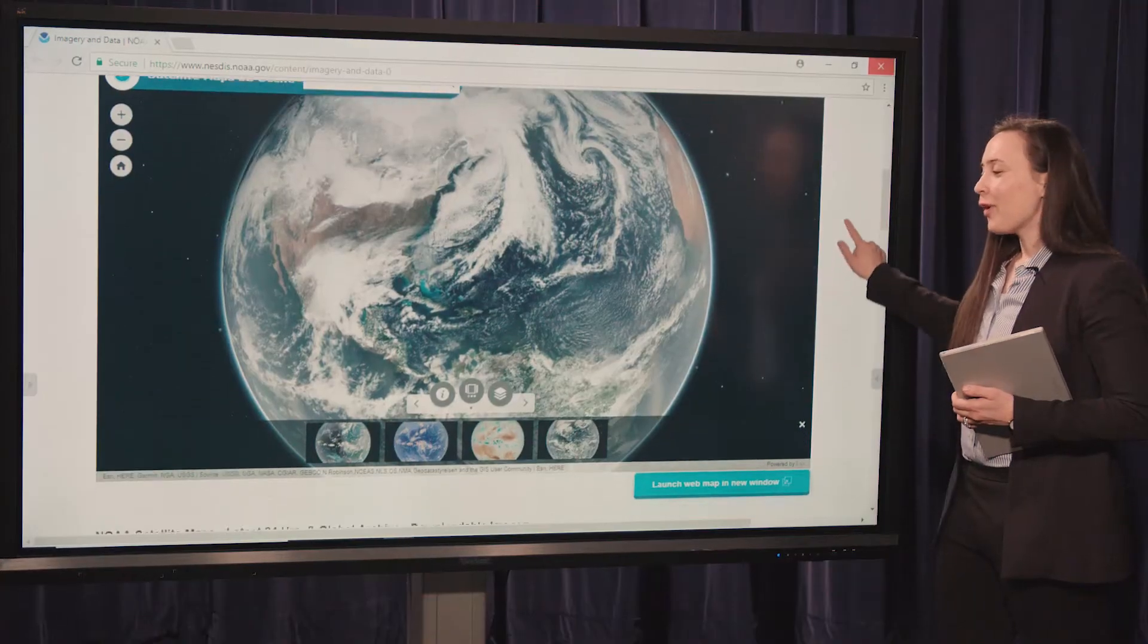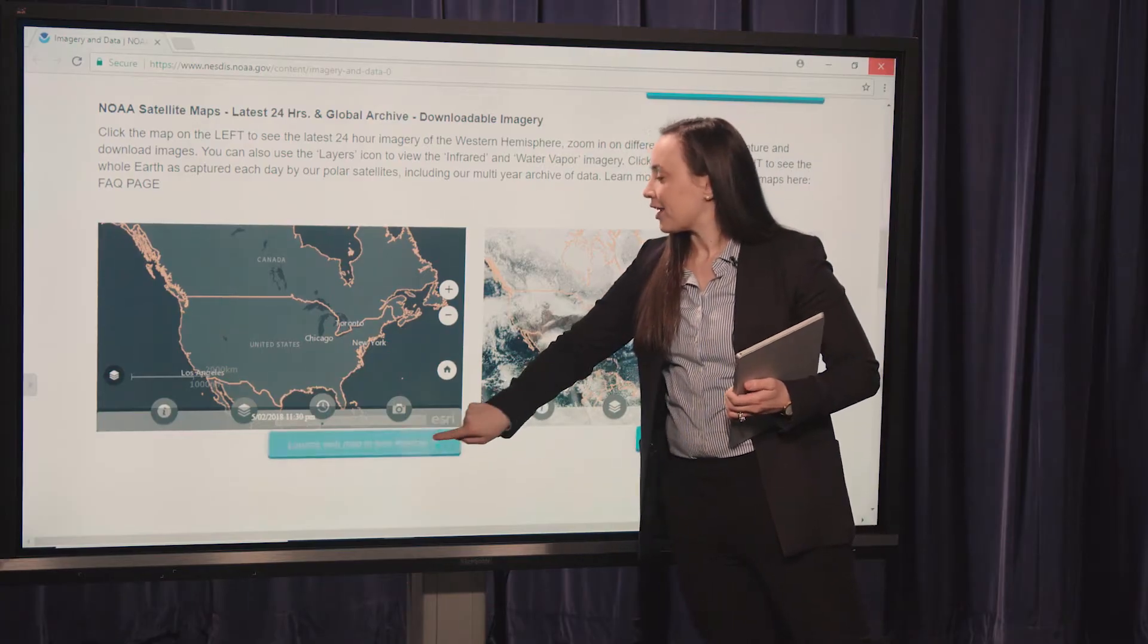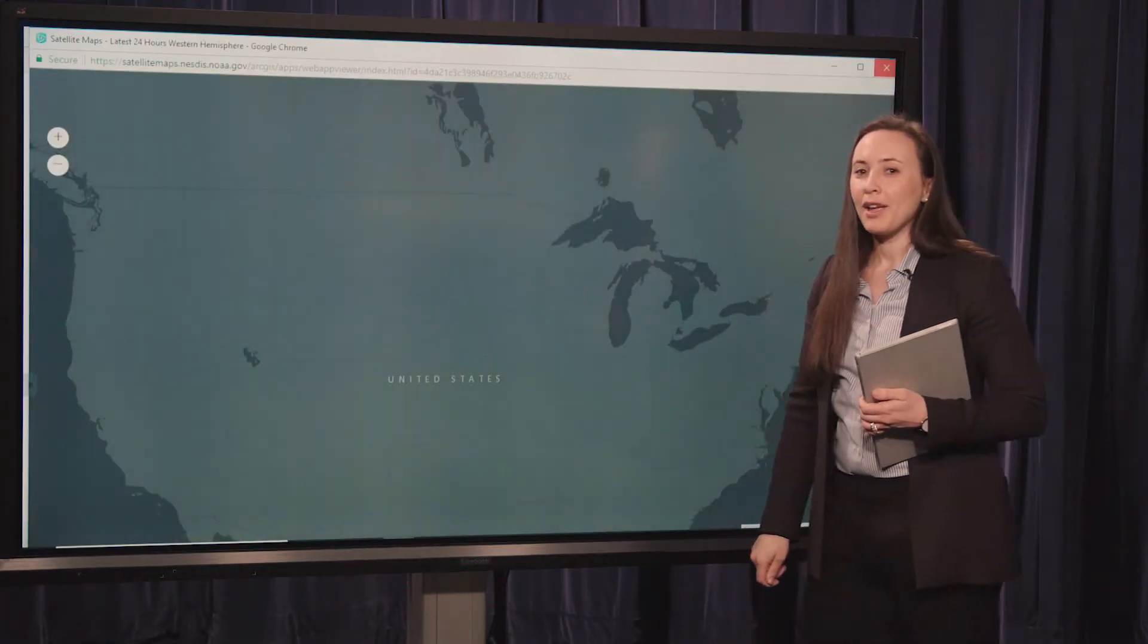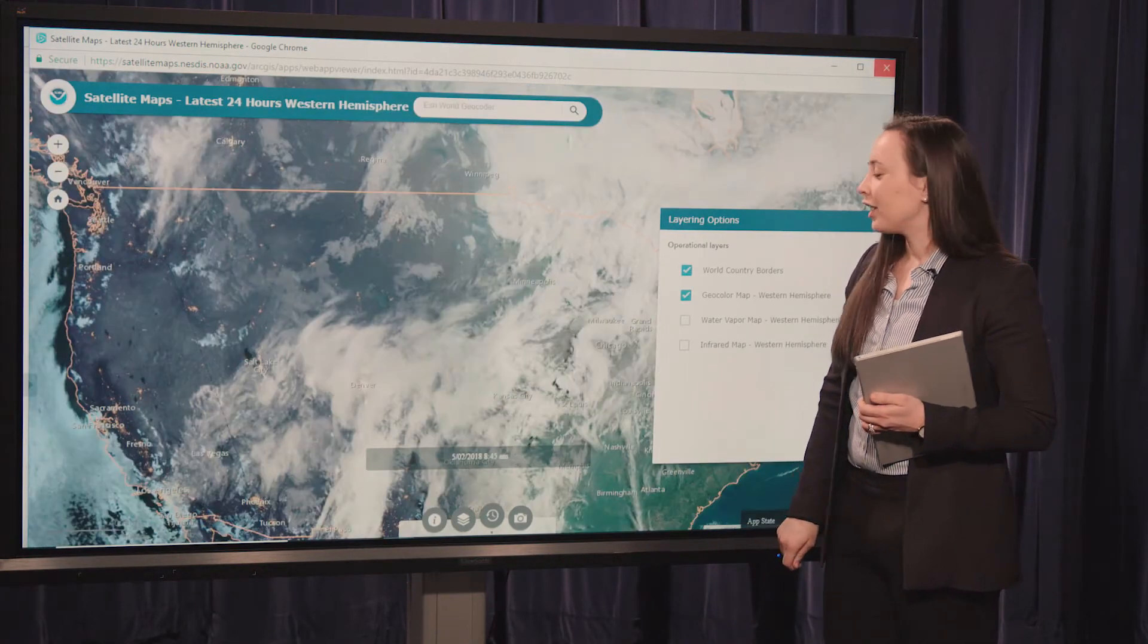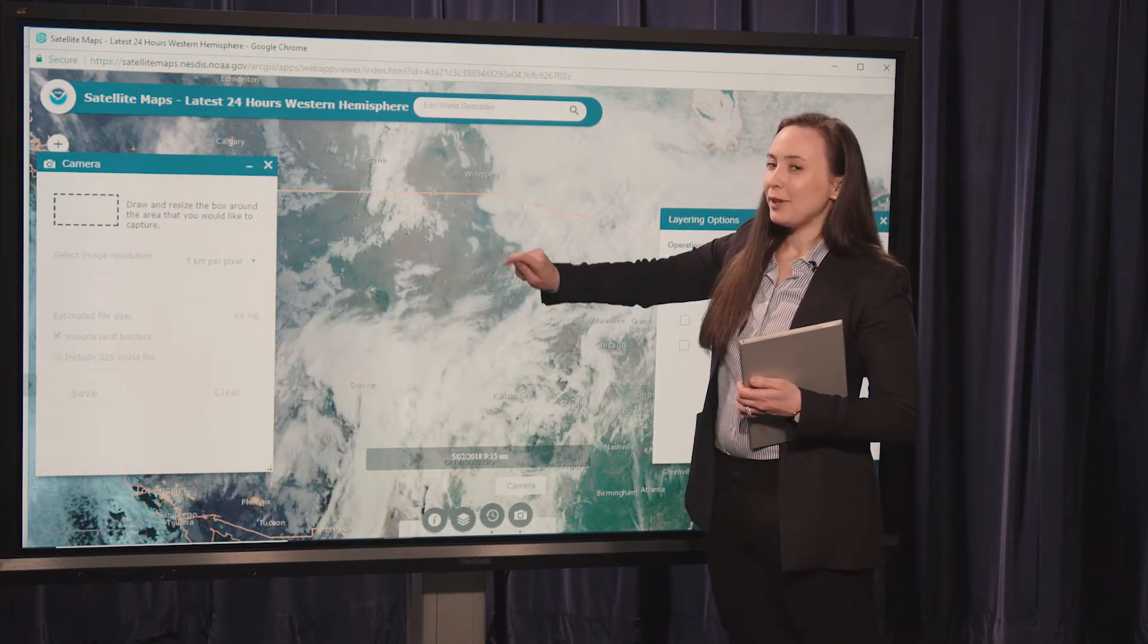Scroll down on our website to see two additional satellite maps. Launch this one in a new window to see the latest 24-hour imagery of the Western Hemisphere. You can use the camera tool to snap an image and download it to your computer.